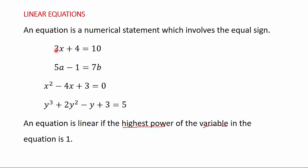From indices, we know that if we write a number like 2 with 5 on top, we call 2 the base and 5 the exponent, power, or index. So for an equation to be linear, the highest power of the variable in the equation must be 1. In the equation 3x plus 4 equals 10, the variable is x and the power of x is 1, since any variable written without an explicit power has a power of 1.